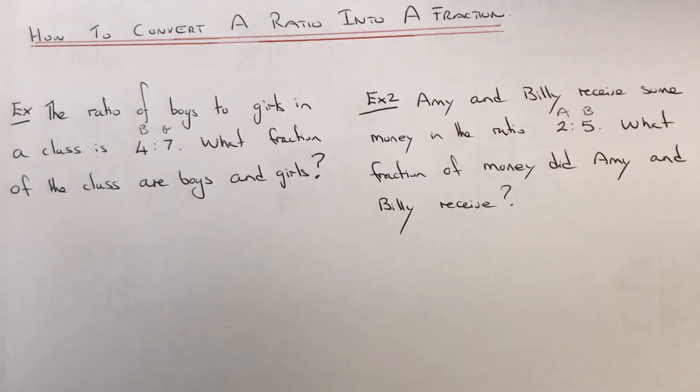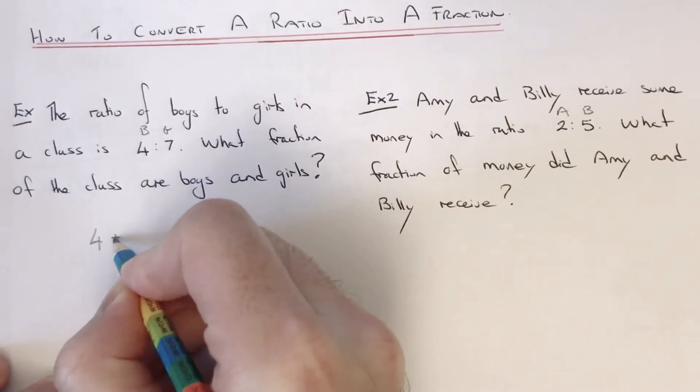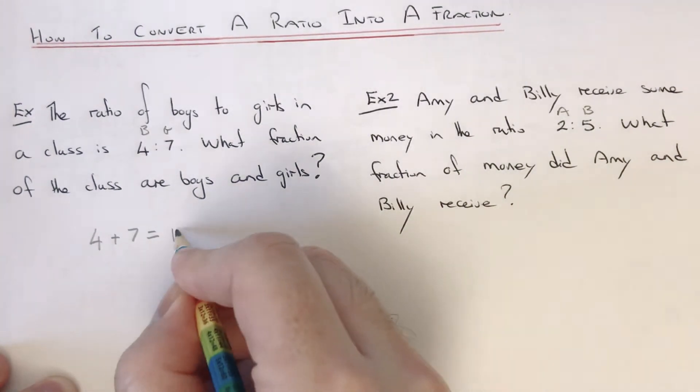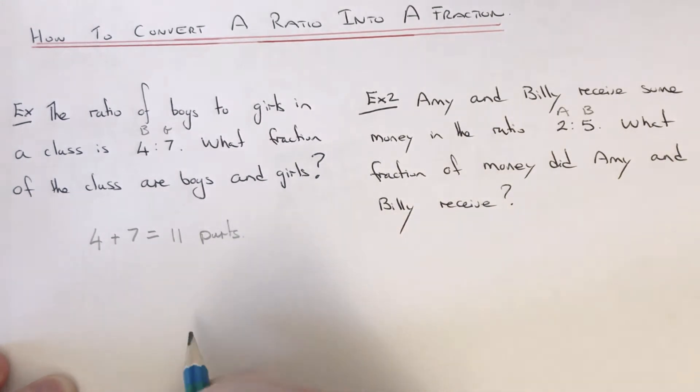is 4 to 7. We've got to write down the fraction of the class which are boys and the fraction which are girls. The first thing you need to do is add the parts up in the ratio. So we got 4 add 7 is 11 parts, and this number goes on